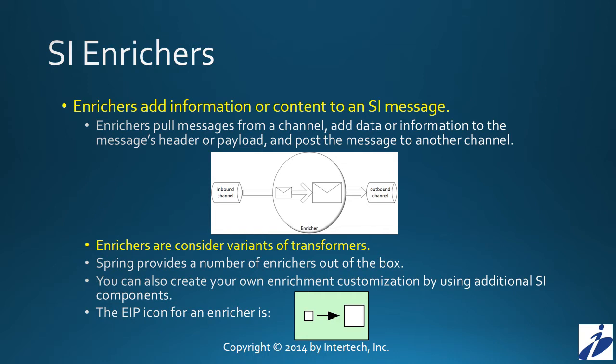As we've seen with all Spring Integration components, there are a number of enrichers that come out of the box. But, as we've also seen with Spring Integration, you can also create your own enrichment customization. You do that by adding specific Spring Integration components to the enrichment configuration — typically through what we call a service activator. The integration pattern icon for enricher is shown here at the bottom of the slide.